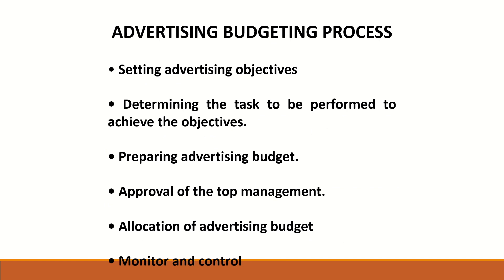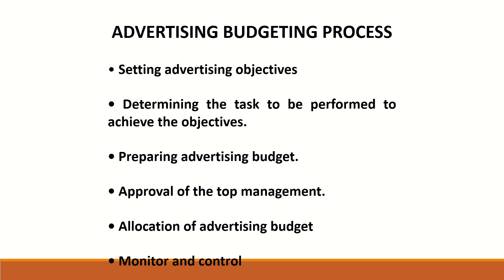Now we will see what is the process of advertising budget. Setting advertising budget is the first step, followed by determining the task to be performed to achieve the objectives and prepare the advertising budget, approval by top management, allocation of advertisement budget, and monitor and control are the various steps in this process.